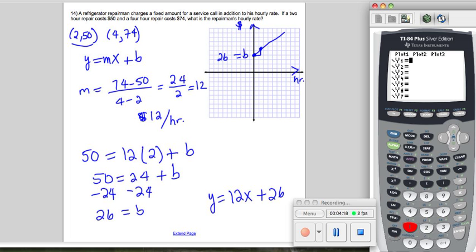If you put that in, 12, here's the x button that's next to the green alpha key, plus 26, and you press graph, there's the equation of the line. And if we change the window...